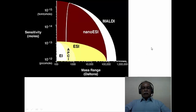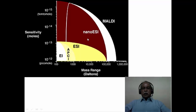This familiar graph shows the mass range covered by various ionization techniques and their sensitivity. The electron impact and chemical ionization mass spectrometry typically go up to about 1200 Daltons, whereas electrospray ionization can go beyond 1000 all the way to 100,000 or so, with sensitivity in the picomolar range. Nano electrospray ionization covers a similar molecular weight region, while MALDI can go up to close to 1 million, with sensitivity at the femtomolar concentration level.